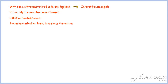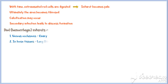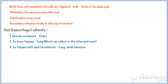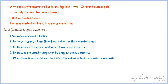Secondary infection of these infarcts can lead to abscess formation. Red or hemorrhagic infarctions occur in the following settings: with venous occlusions such as in ovarian vein obstruction; in loose tissues such as in the lungs where blood can collect in the infarcted zone; in tissues with dual circulations such as the lung and small intestines; in tissues previously congested by sluggish venous outflow; and when flow is re-established to a site of previous arterial occlusion and necrosis — for example, following angioplasty of an arterial obstruction.